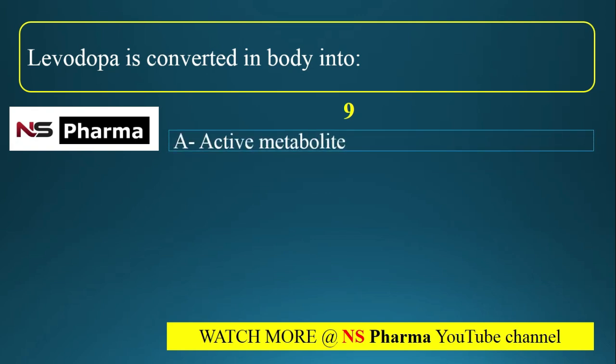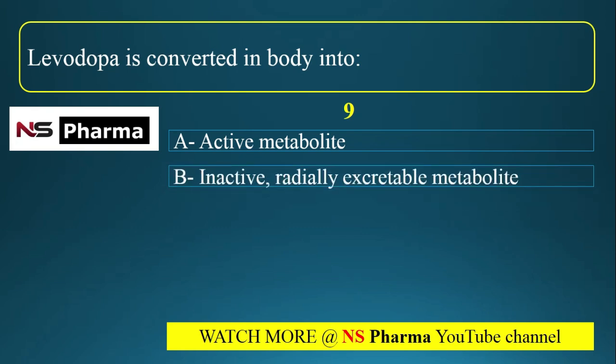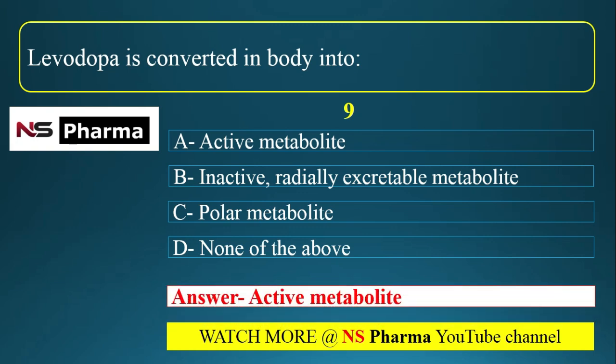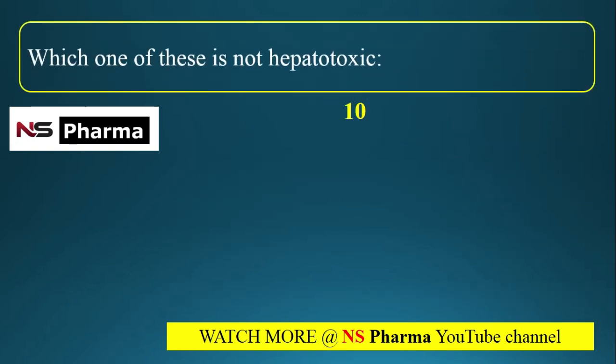Question 9: Levodopa is converted in the body into — (a) active metabolite, (b) inactive readily excretable metabolite, (c) polar metabolite, (d) none of the above. The correct answer is option A: active metabolite. Levodopa is converted to dopamine by DOPA decarboxylase (DDDC) enzyme, and also to 3-methyl-DOPA by catechol-O-methyltransferase (COMT).